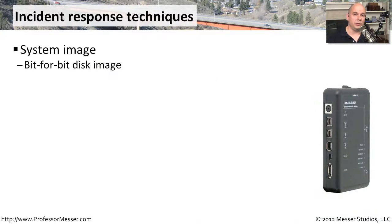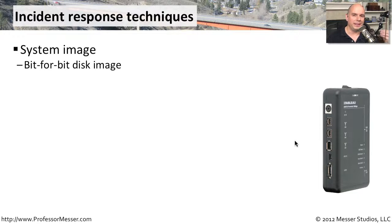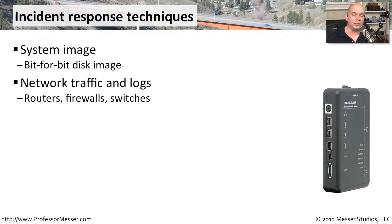There are things you can do with a security incident to preserve some of this data. One common way is to image an entire hard drive — take every bit on that hard drive and copy it somewhere else. This portable product lets you plug in an external hard drive, a SATA drive, or a PATA drive, and copy every single bit of information off to a separate machine. You also want to look at network traffic and the logs of what's going across your network — check your routers, switches, and firewalls to gather information that way.